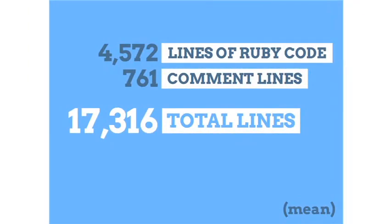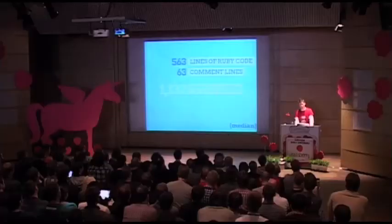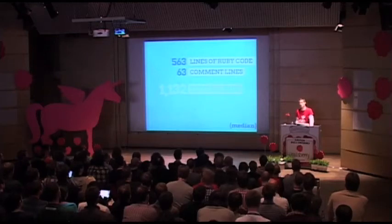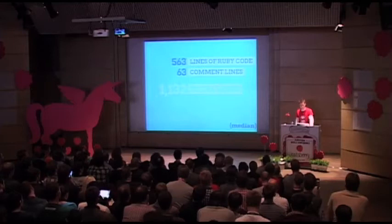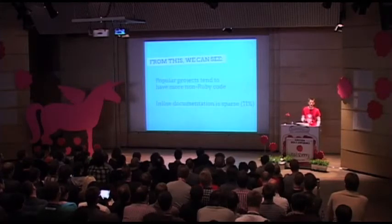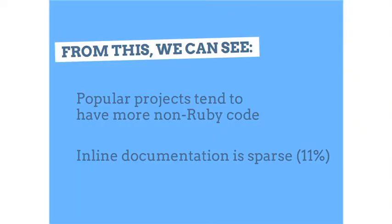So this is sort of the standard Ruby project: about 4,500 lines of Ruby code, 700-some commit lines, 17,000 total lines of code — that's the mean. Popular projects bring these numbers way up. If you look at the median, which is sometimes a better indicator, it's about 500 lines of Ruby code, much more manageable, and only about 60 commented lines, which is kind of depressing. But overall it leans to about 1,000 total lines, including readme, licenses, and stuff like that. Inline documentation is sparse — I would rather see that be about 200,000% higher, because I love documentation.